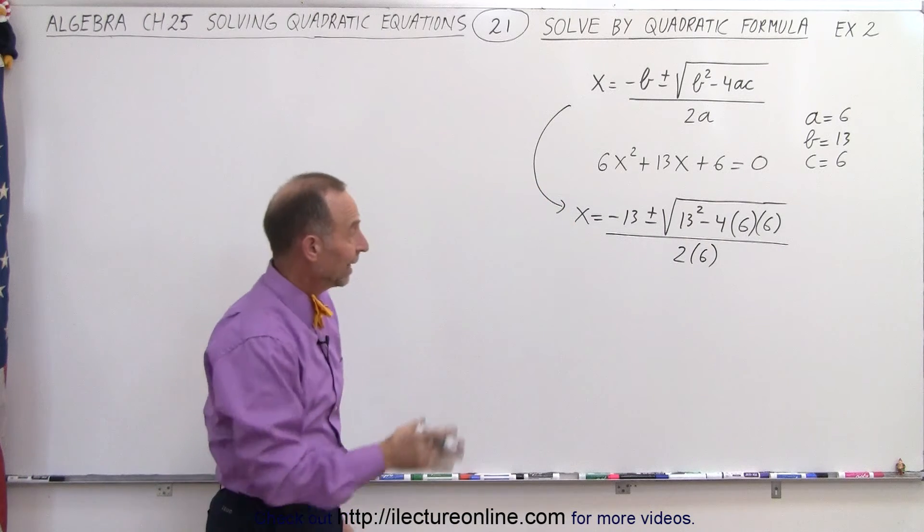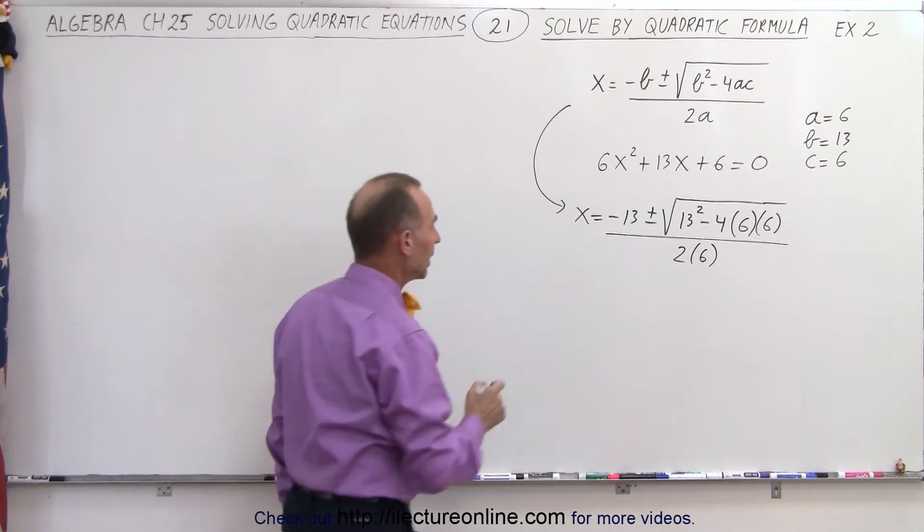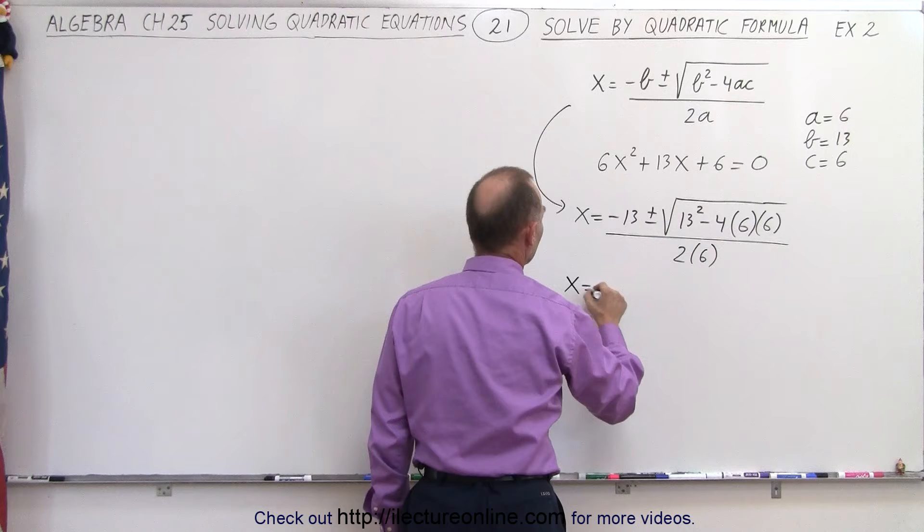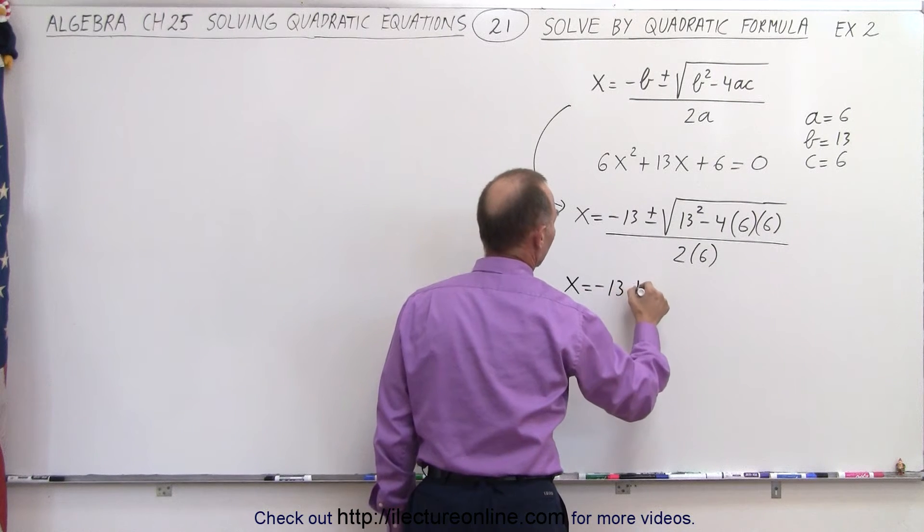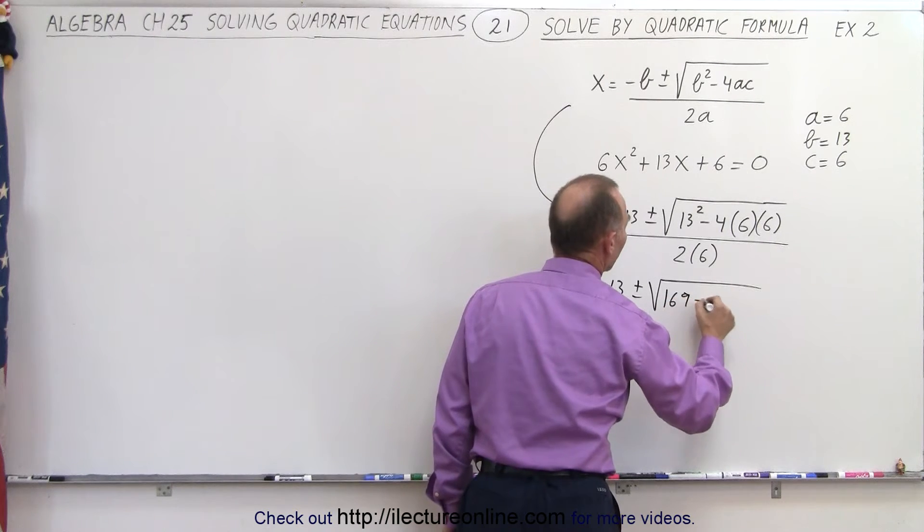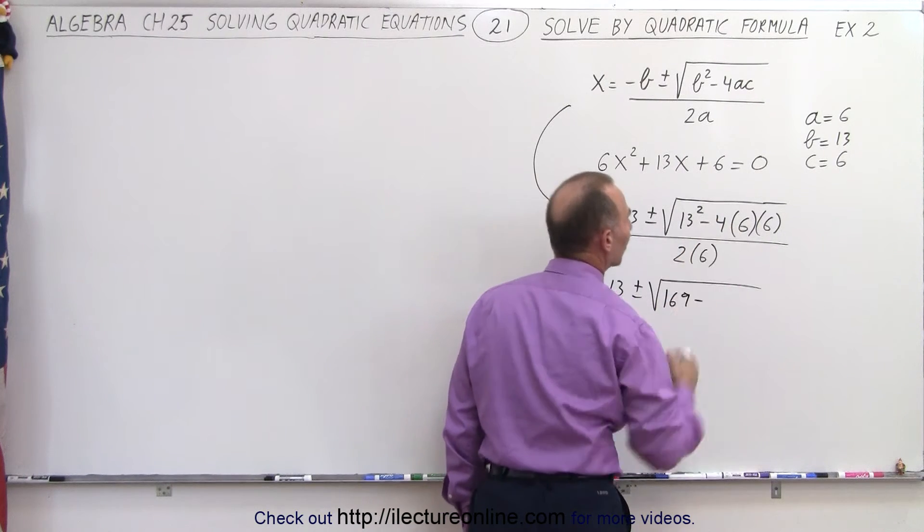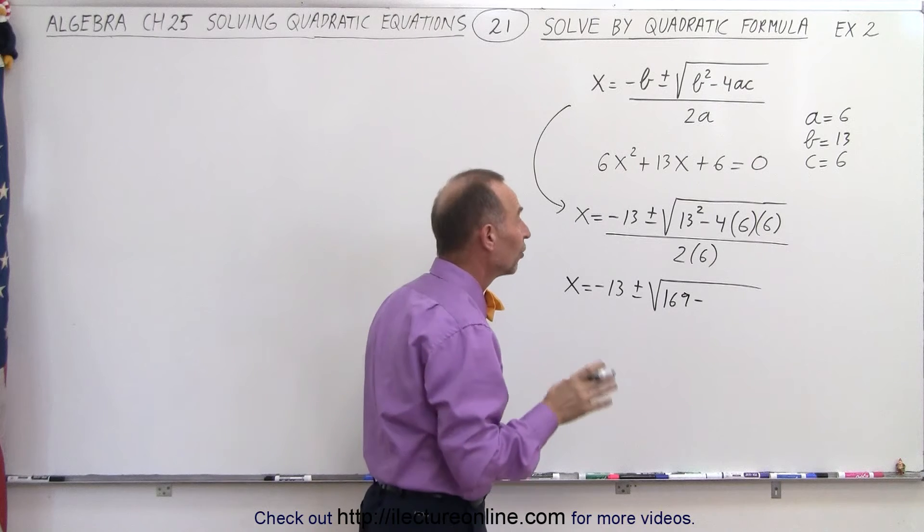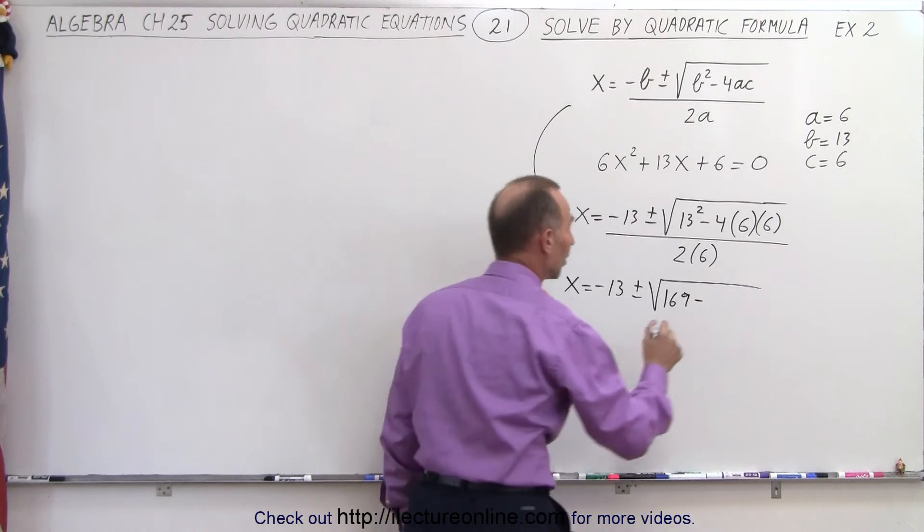And now all we have to do is simplify that and see what we get. So x is equal to minus 13 plus and minus the square root, the square root of 13 squared is 169, minus 4 times 6 times 6. 6 times 6 is 36, twice that is 72, twice that is 144, all divided by 12.